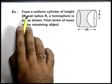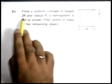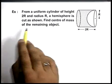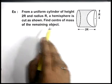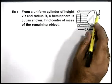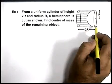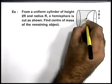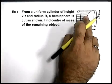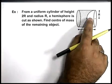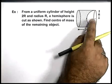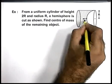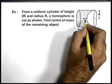In this example, we are given that from a uniform cylinder of height 2r and radius r, a hemisphere is cut as shown. We are required to find the centre of mass of the remaining object. This is the cylinder having height 2r and base radius r, and a hemisphere is cut from it. When the hemisphere is cut from the right half, the centre of mass will be displaced toward the left, say by a distance x, and we are required to find the value of x.